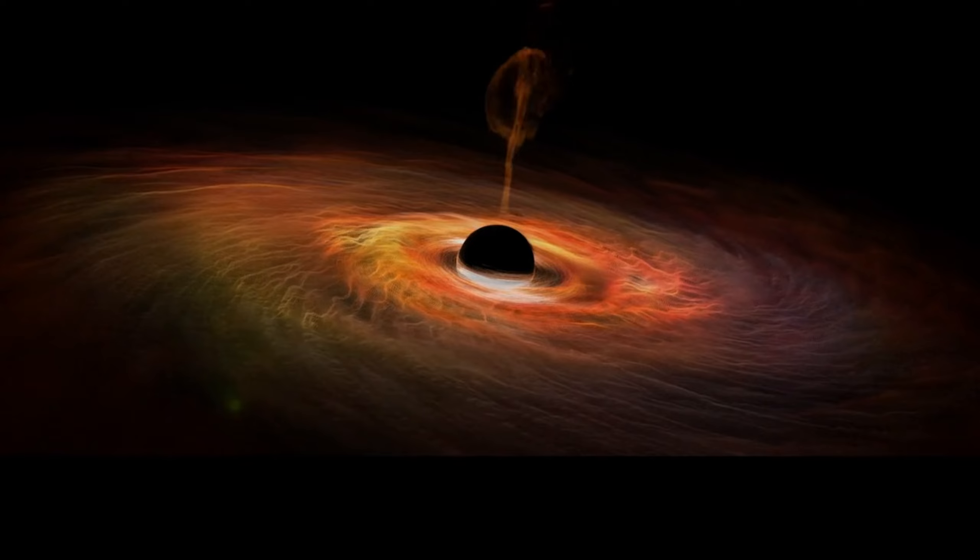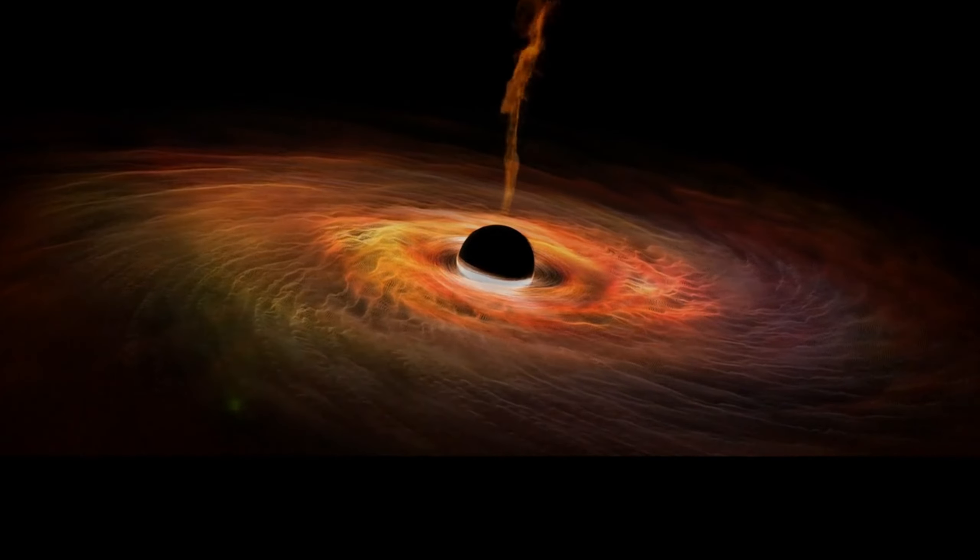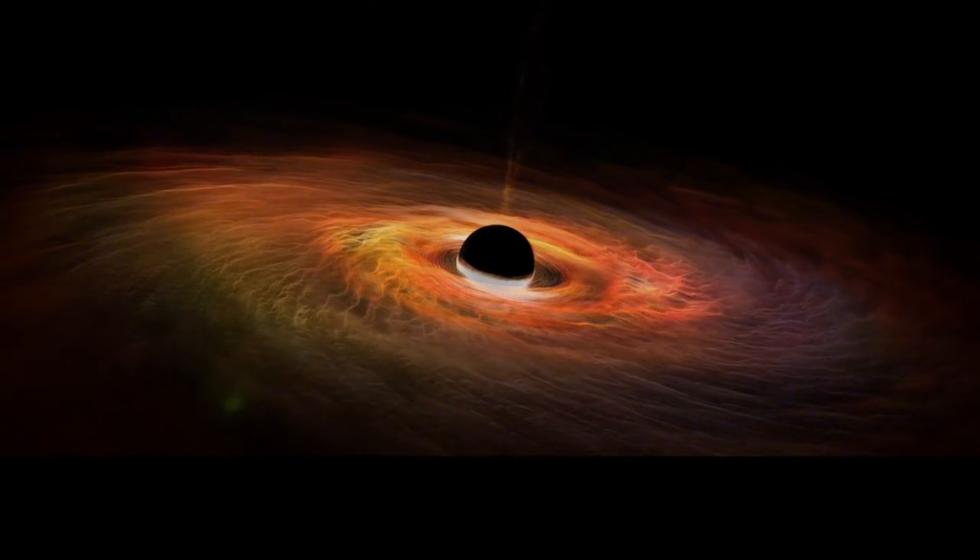Most black holes form from massive stars that have reached the end of their life cycle in a supernova. However, smaller stars, when they die, turn into neutron stars, which are incredibly dense but not dense enough to trap light. If a star is several times the mass of our sun, it implodes under its own gravitational force, forming a black hole.